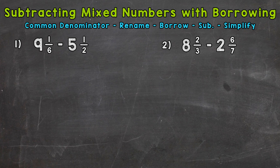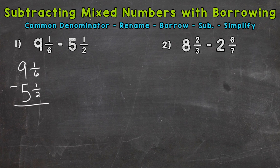We have nine and one-sixth minus five and a half. The first thing that I like to do is set these problems up vertically, so up and down. We have nine and one-sixth minus five and a half, so the fractions are lined up and the whole numbers are lined up.